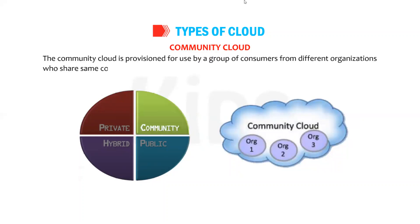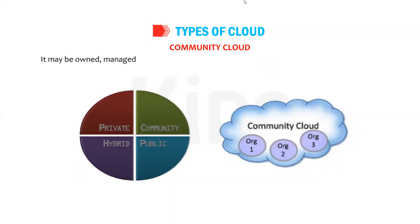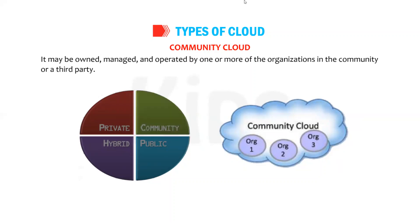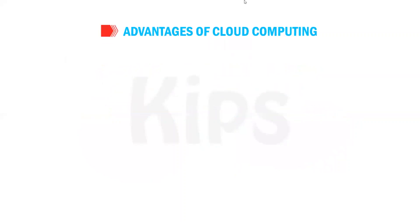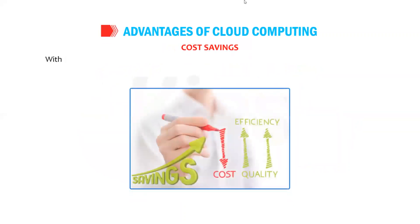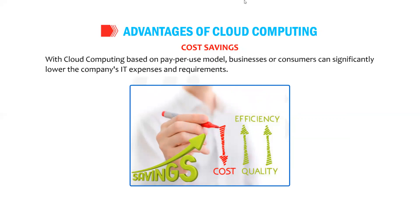The fourth type is the community cloud — provisioned for use by a group of consumers from different organizations who share the same concerns, requirements, security requirements, policy, and efficiency demands. It may be owned, managed, and operated by one or more organizations in the community or a third party. Now let us talk about the advantages of cloud computing. The first advantage is cost savings — with cloud computing's pay-per-use model, businesses and consumers can significantly lower IT expenses and requirements.